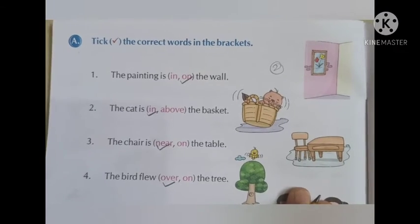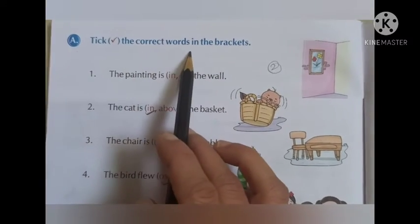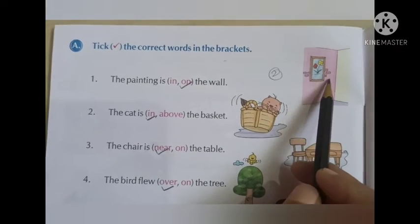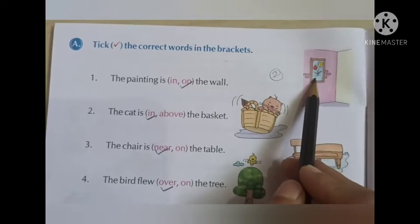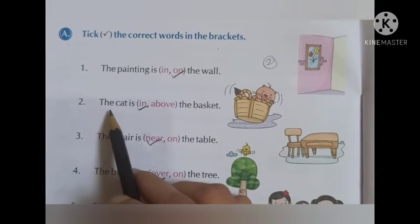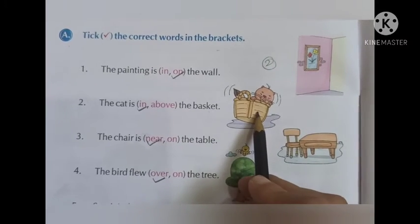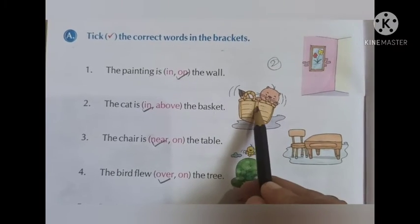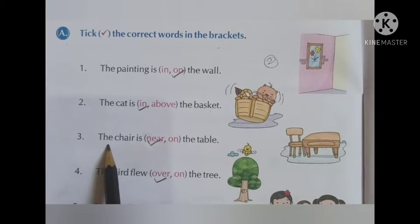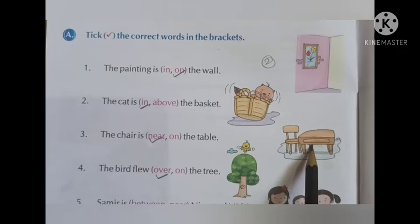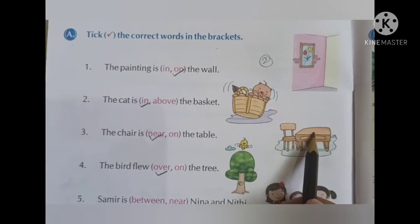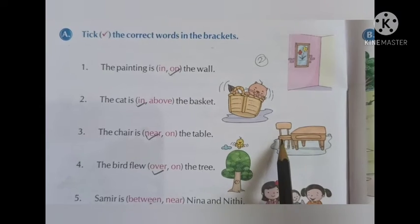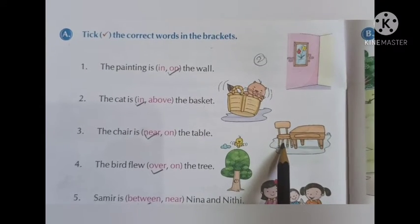Now let us start solving the exercise on page number 68: use the correct words in brackets. The painting is in or on the wall — is it inside the wall or on the wall? It is on the wall. The cat is in or above the basket — the cat is inside, so it is in the basket. The chair is near or on the table — the chair is just near to the table, not on the surface, so the chair is near the table.